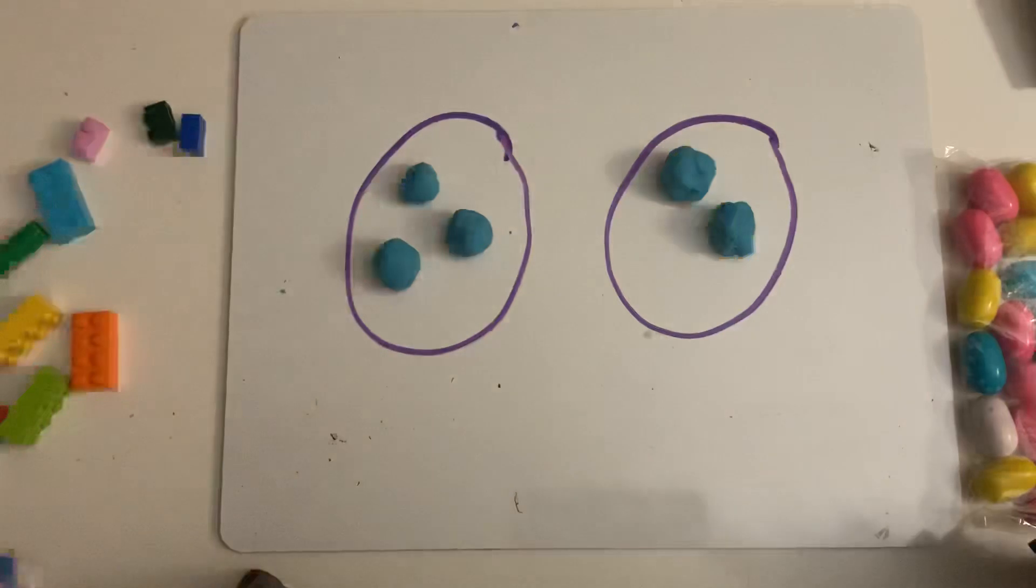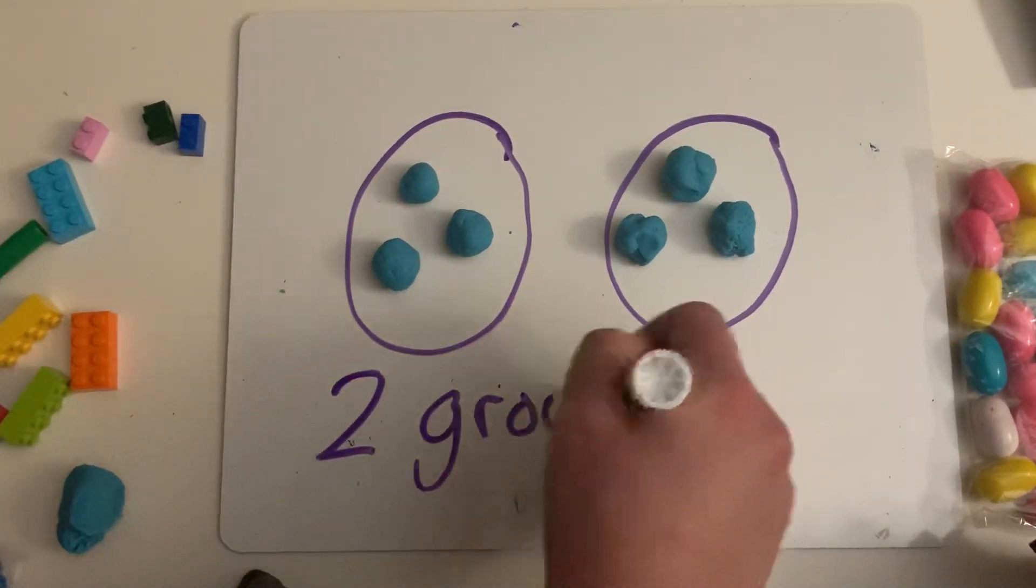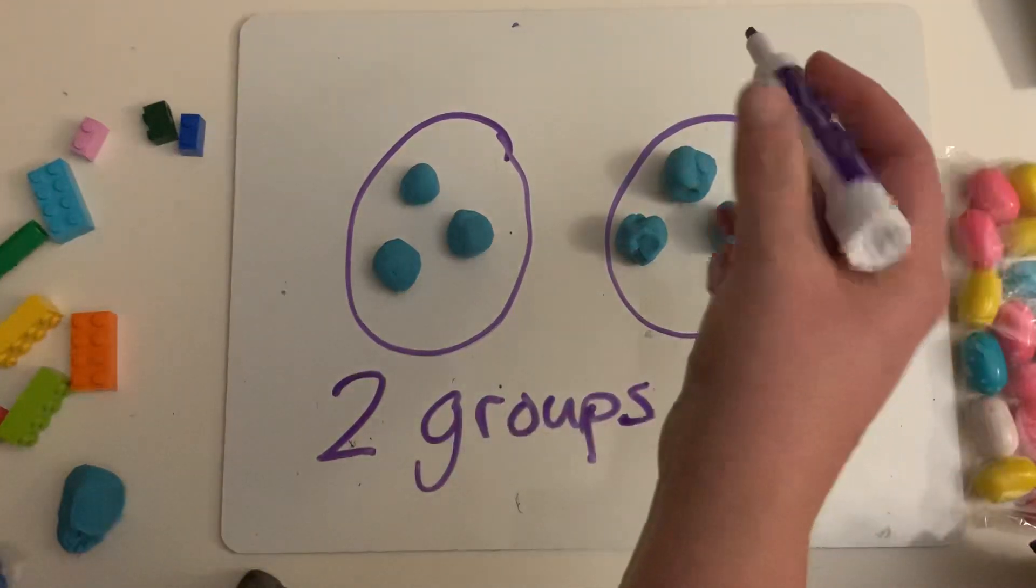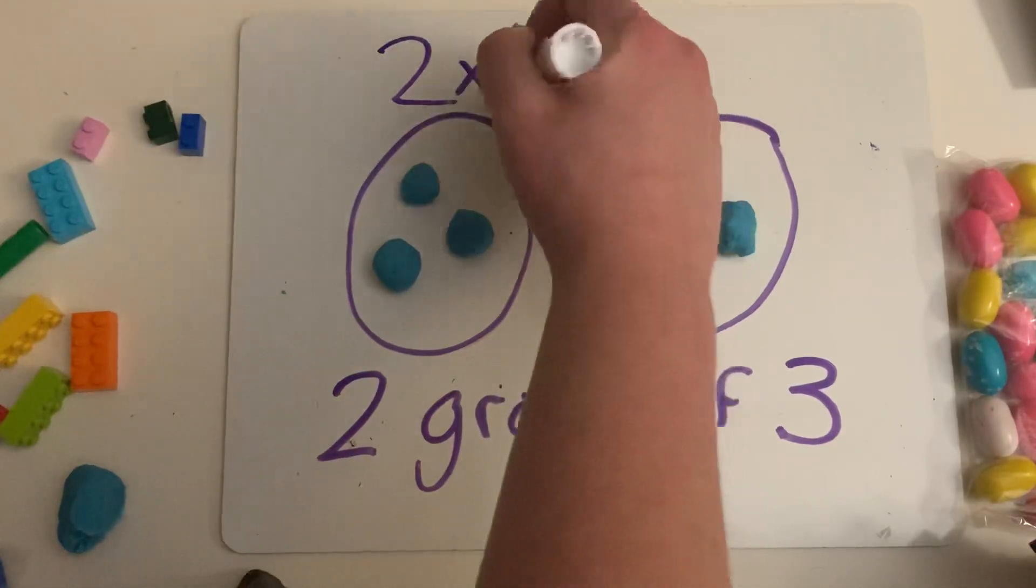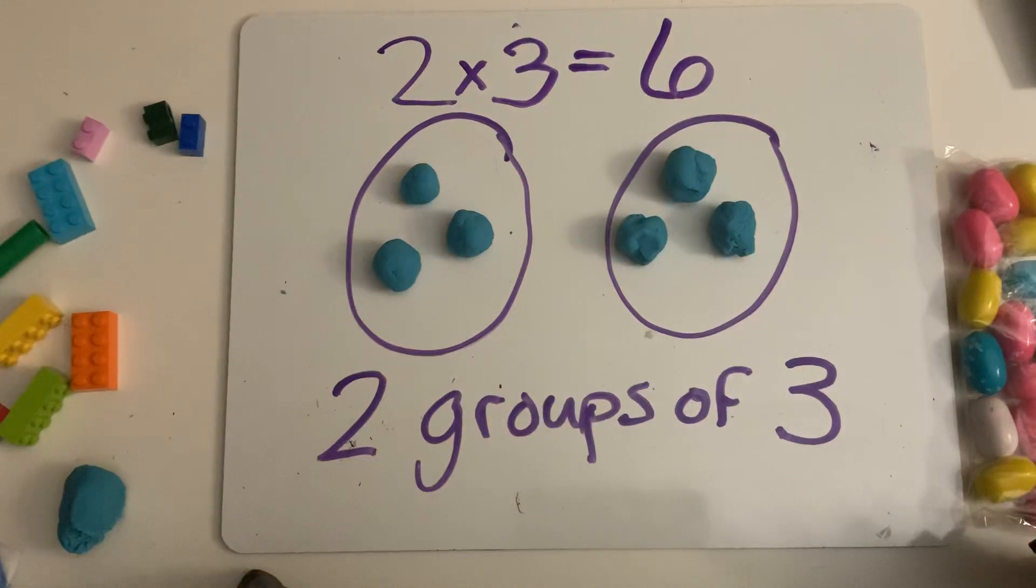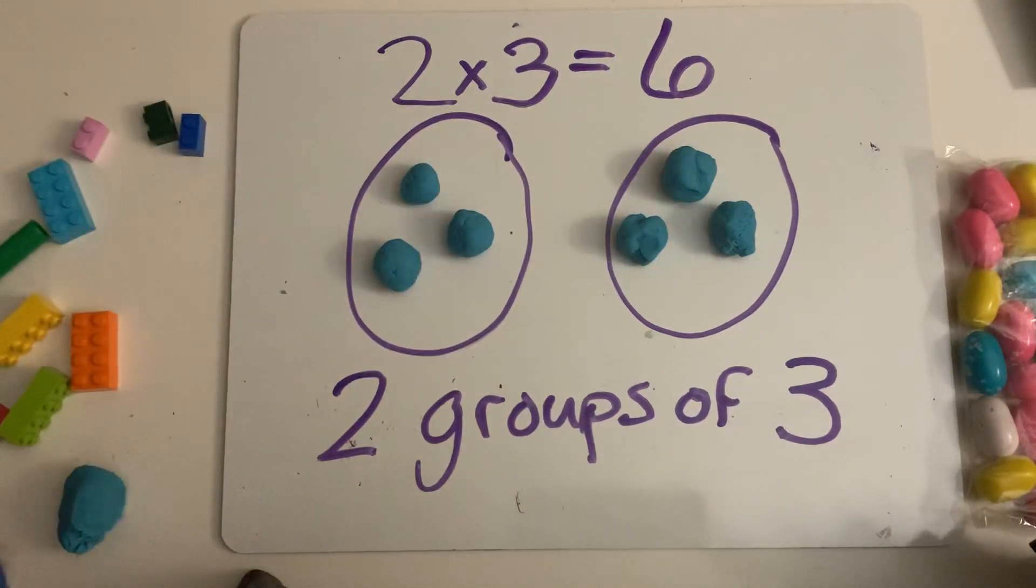Two, three. So right here, this problem shows two groups of three or two times three, which equals six. All I do is count the objects that I placed in the groups.